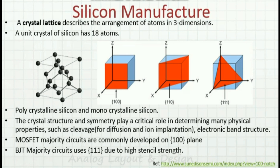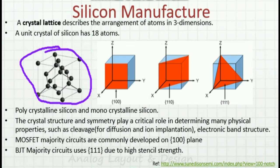A crystal lattice describes the arrangement of atoms in three dimensions. A unit crystal of silicon has 18 atoms on this diagram. Based on the arrangement of the crystal lattice, there are three different orientations — it is either the 1,0,0 orientation, the 1,1,0 orientation, or the 1,1,1 orientation. You can see this is the front face, the diagonal face, or from bottom to top like a triangular face.